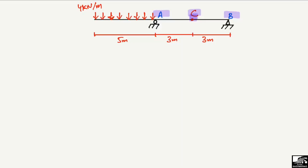Let's start with the support reactions first. At point A we have a roller support, which can take only the vertical reaction, represented by RA. At point B we have a hinge support, so it can take both the vertical reaction RB and also the horizontal reaction RBx. However, since there is no horizontal load acting on this beam, RBx will be zero directly.